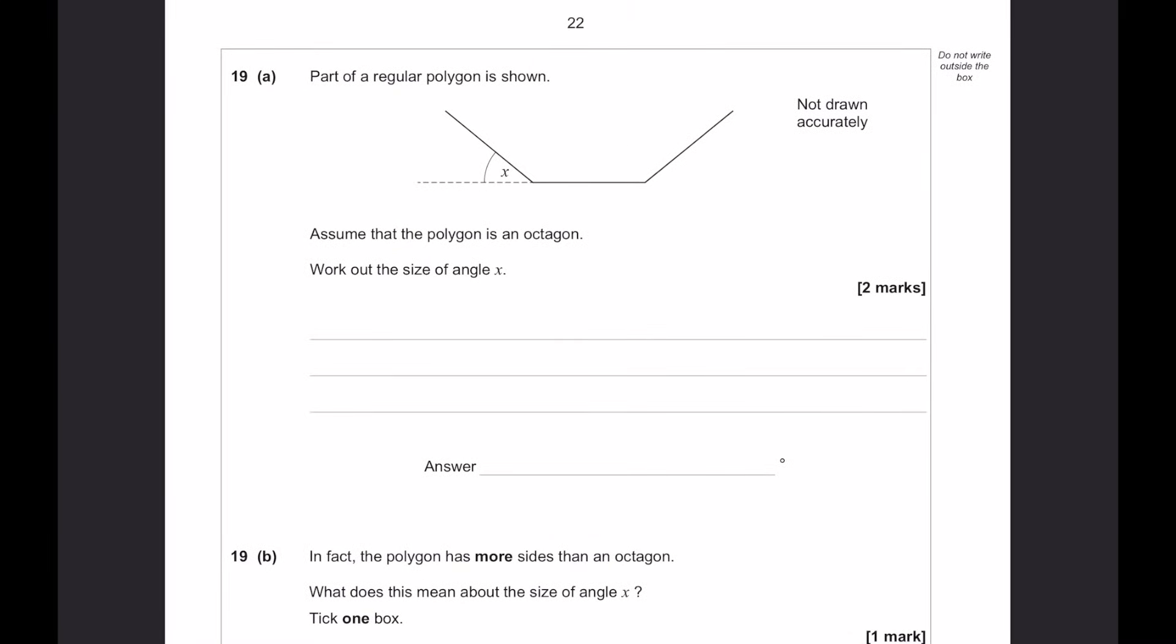Part of a regular polygon is shown. Assume that the polygon is an octagon. Work out the size of angle X. Okay, straight away, a simple fact to remember. All the external angles, so, for example, this X is an external angle, add up to 360 in any shape. So, 360 divided by 8 will tell us each one of these X's straight away. That is going to be 45, and that is our final answer for this one. That is why it's only 2 marks. There is another method using the internal angles, and then subtracting by 180. Let me know your method in the comments, if you do know that way.